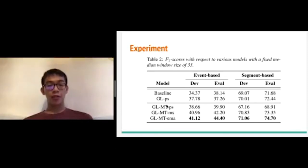GLMT-PS means the GLMT Promising Student Model on the Guided Learning side. GLMT-MS means the Mean Student Model on the Mean Teacher side. GLMT-EMA means the Exponential Moving Average of the Mean Student Model, and this is the teacher model in the Mean Teacher side.